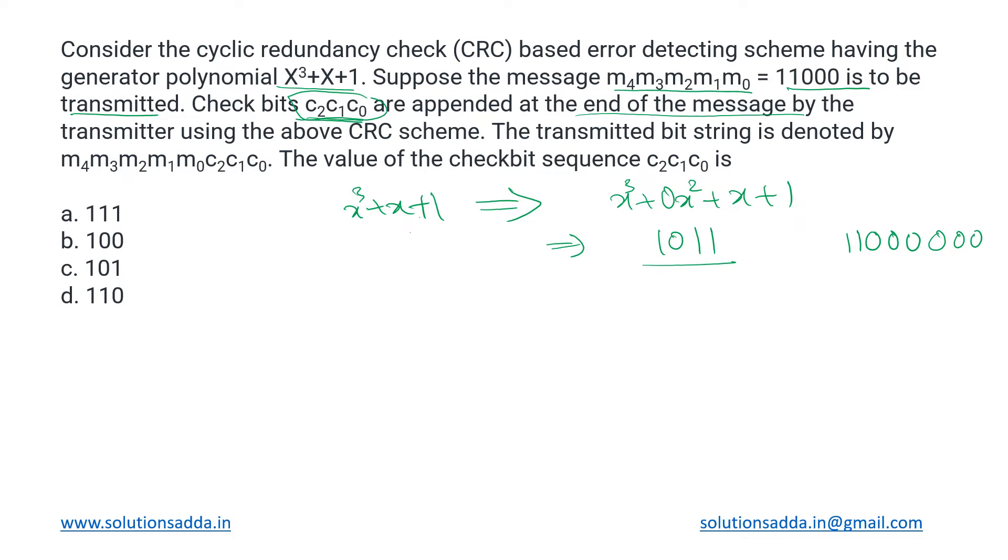So that on the receiver side it can once again perform the same mechanism and check if it is getting zero as the result. If not, then it will detect that there is an error in the transmitted message.